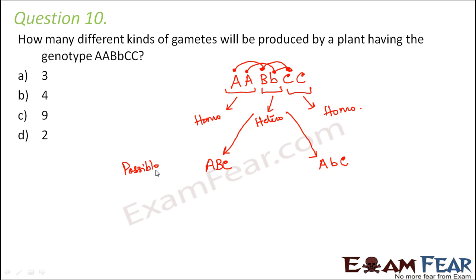So how many possible gametes do you have? You have two possible gametes. Therefore, D would be the correct option.